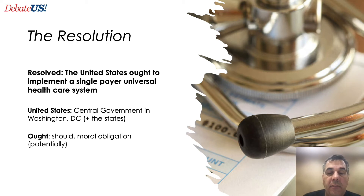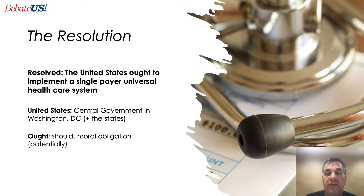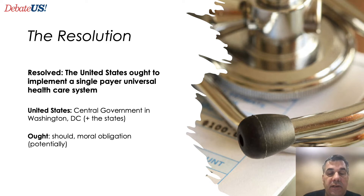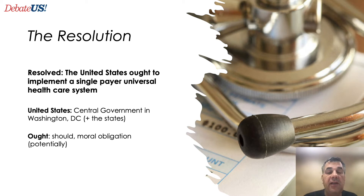There was a college policy topic a number of years ago where they just put in the term 'United States' to allow the affirmative to use state government as the actor — so you could imagine all 50 states acting. There is a pretty big debate as to whether 'United States,' when referring to an actor, only refers to the federal government or also refers to the states. Generally in debate, we take it to mean the central government in Washington, D.C., but definitionally, when you take out the words 'federal government,' it can refer to the states as well.